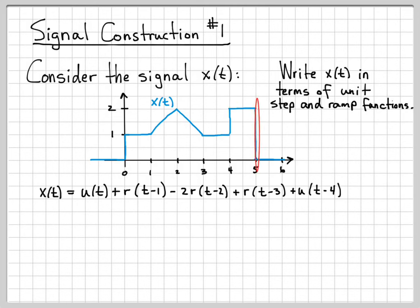And then finally, at time five, I need to step down two. I had a value of two that I was holding. I need to step down to zero and hold that. So at time five, I need to step down two. So that's minus 2u(t-5).